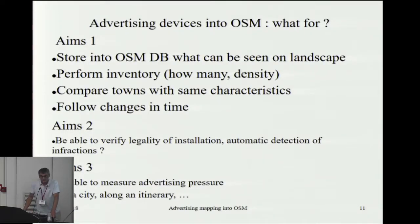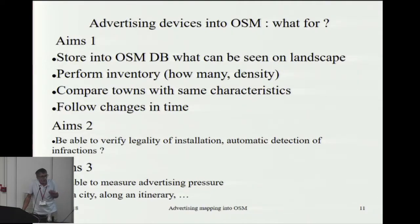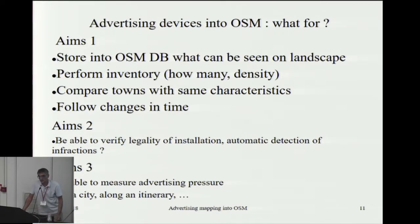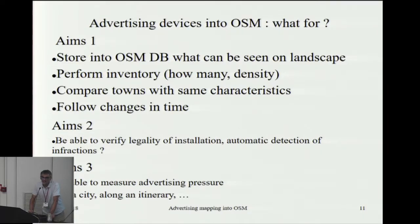For all these reasons, it's quite important for citizens to control, or to have some kind of control on, the number of advertising devices appearing in the landscape — so that we can know how many there are, what is the density, to be able to compare public policy of similar towns, and to follow change over time. In any case, it is legitimate to have in the OSM database all that appears in the landscape, and since advertising devices appear in the landscape, it's normal to have them. If the inventory were well done, we could do some analysis and measure the advertising pressure, for example.